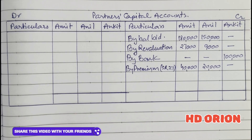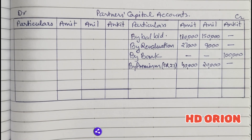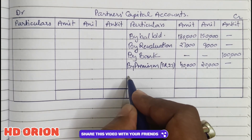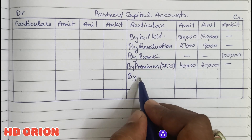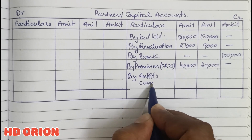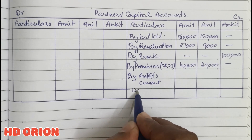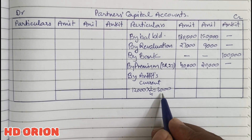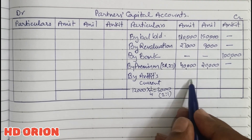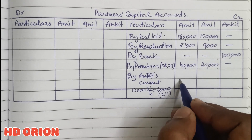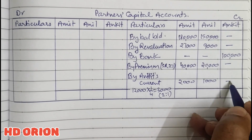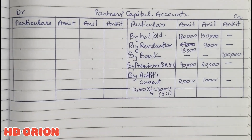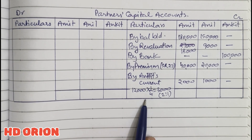One more thing mentioned in point D is that general reserve will continue to appear in the new balance sheet. So to the credit of capital accounts, we write Ankit's current account. General reserve is rupees 12,000 and Ankit's portion is 1 by 4, which equals rupees 3,000. This rupees 3,000 is given in sacrificing ratio 2 is to 1 to Amit and Anil — that is rupees 2,000 and rupees 1,000. Note: revaluation profit is rupees 18,000 and rupees 9,000 — not 27,000.